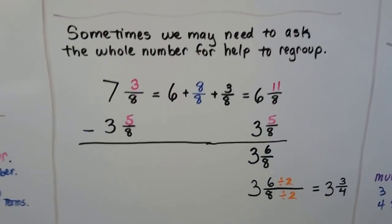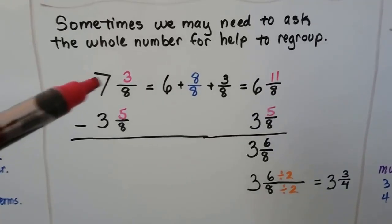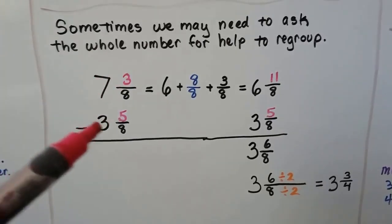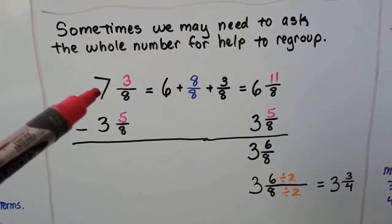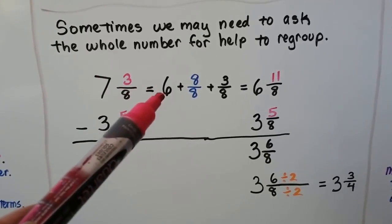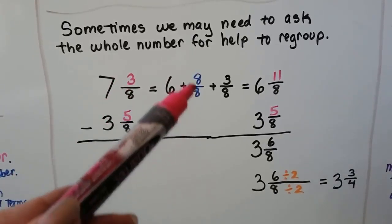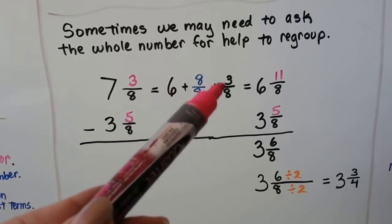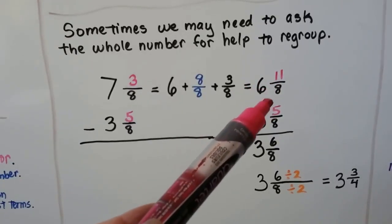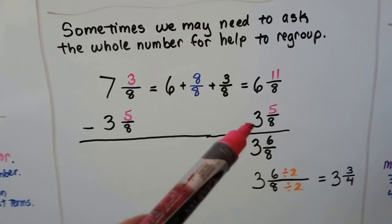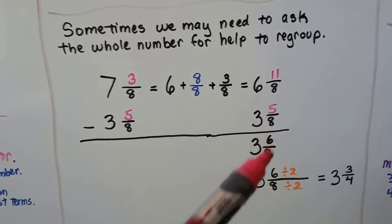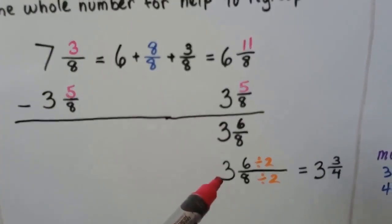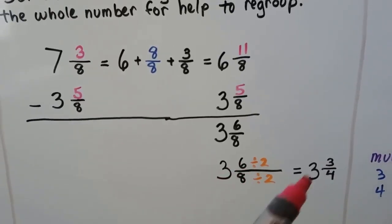Sometimes we may need to ask the whole number for help to regroup. If we have 7 and 3 eighths and we want to take away 3 and 5 eighths, we can't have 3 and take 5 away. So the 7 becomes a 6 and gives an 8 eighths — because when the numerator and denominator are the same, that's a 1. We add that 8 eighths to the 3 eighths and get 11 eighths, so we have 6 and 11 eighths. Now we can take away 3 and 5 eighths: 11 take away 5 is 6, giving us 6 eighths. Subtract the whole numbers and get a 3. This 3 and 6 eighths can be reduced by dividing both by 2 to get 3 and 3 fourths.